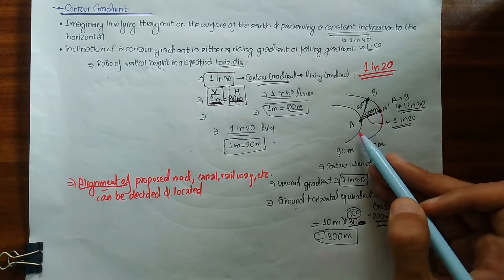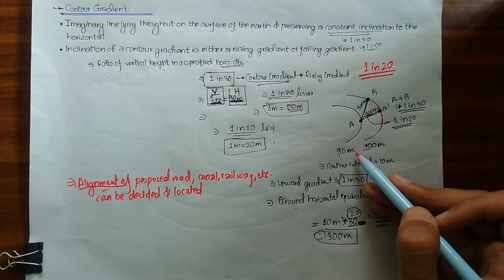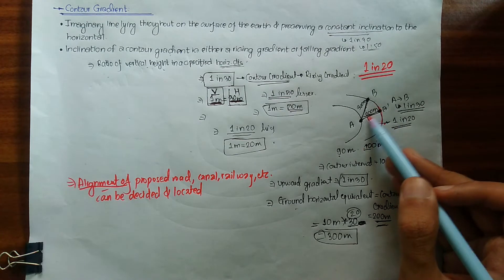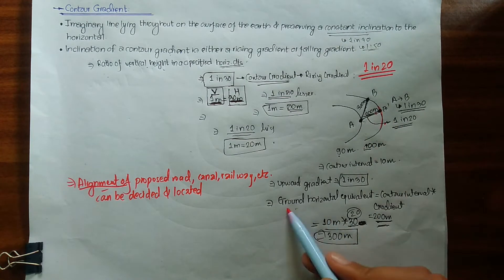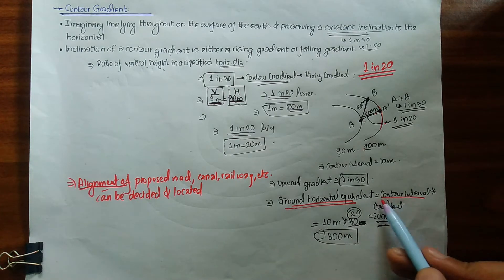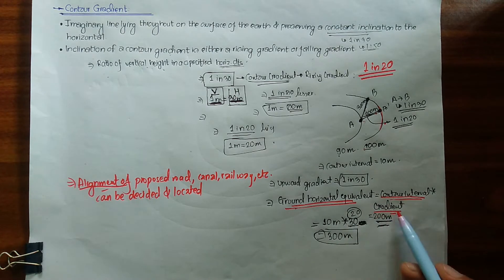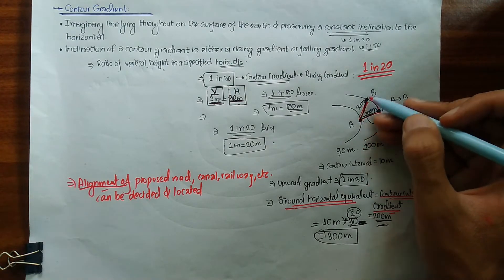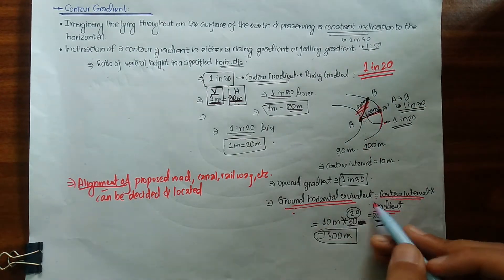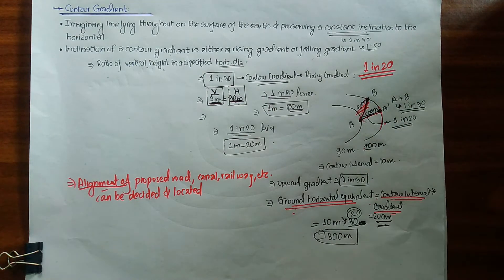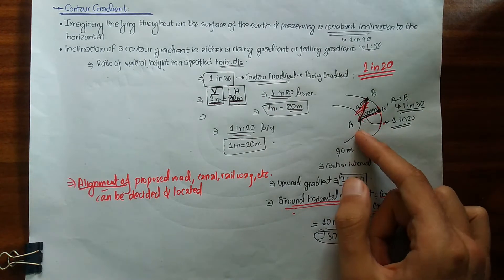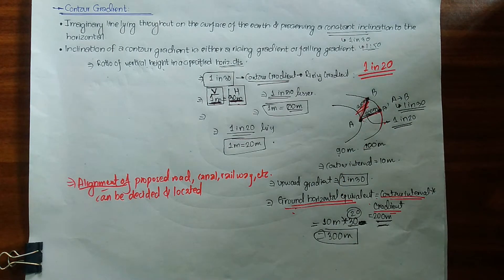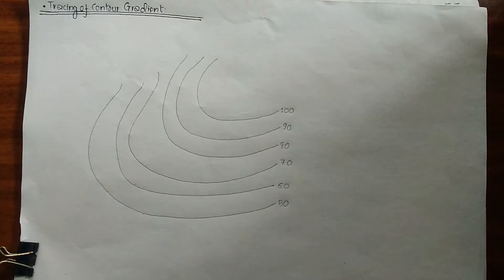As you can see, we have our two contour lines with our contour interval. For the required gradient, we find the ground horizontal equivalent — which equals contour interval multiplied by gradient — and then draw lines of that specific ground horizontal equivalent to produce the required contour gradient. Next, I will explain how to trace a contour gradient in practice.